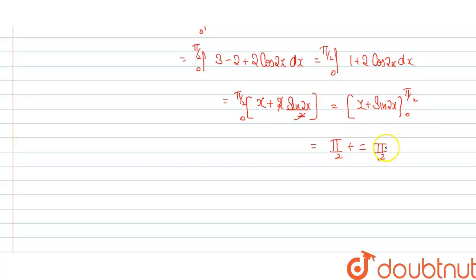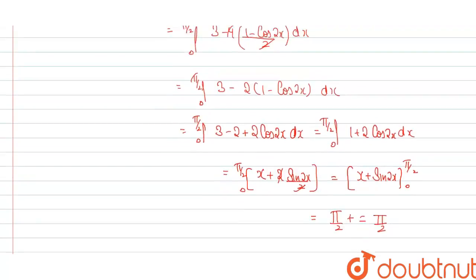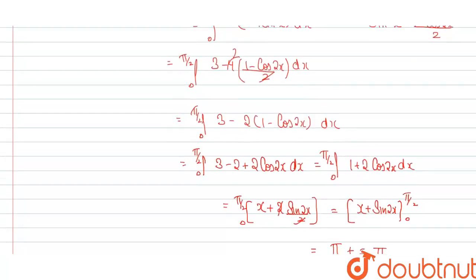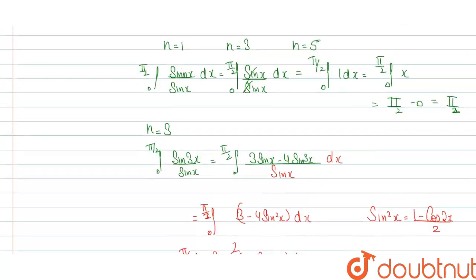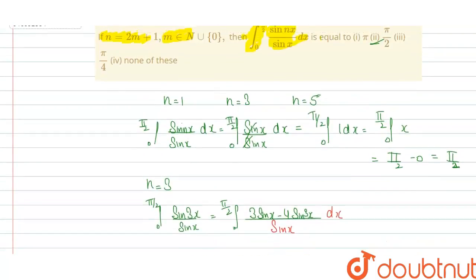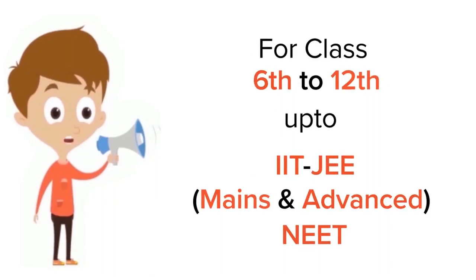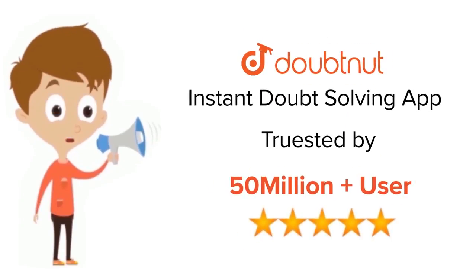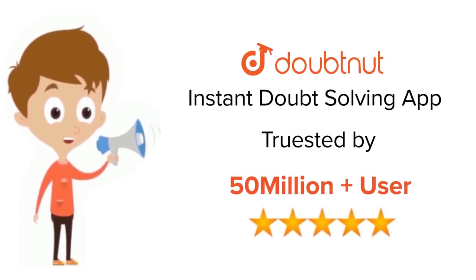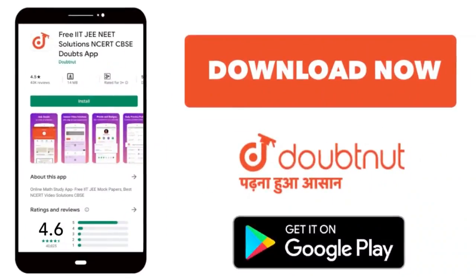As you can see, we are getting the answer π/2 when we put n equal to 1 and n equal to 3. Similarly, when we put n equal to 5, the answer will also be π/2. So the answer is π/2. Thank you for watching. DoubtNut has solutions for class 6 to 12, IIT-JEE, and NEET level, trusted by more than 5 crore students. Download the DoubtNut app today.